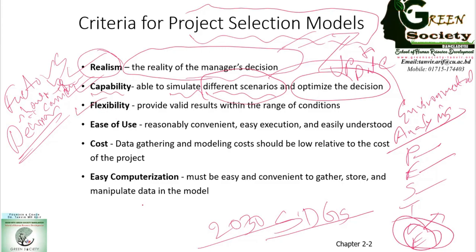The third criterion is flexibility. We are business people — we move with projects, so we are not static. When we consider different scenarios, with the changes of political, economic, social, and other conditions, we need to change. Our model should be flexible so that we can adapt to any sort of changes in conditions.